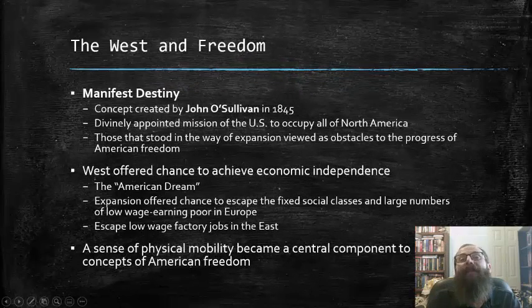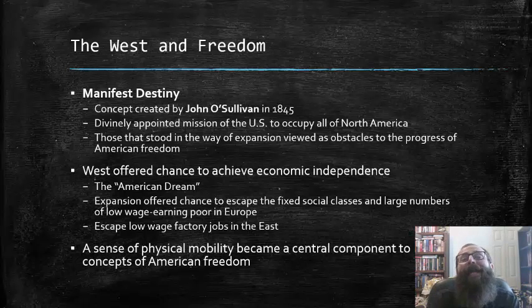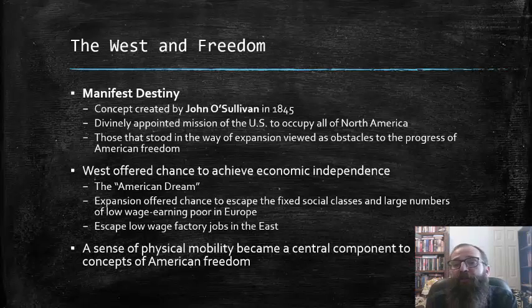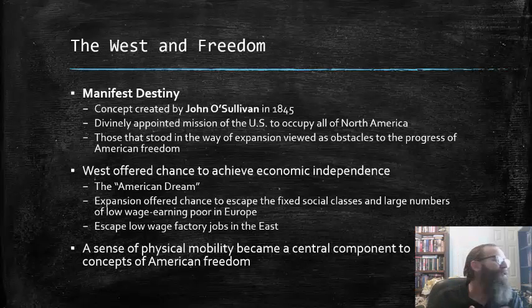The ever-increasing emphasis on Western expansion and settlement during this period led to the creation of an idea known as Manifest Destiny. This was a concept created by journalist John O'Sullivan in 1845 that basically posited that the United States had a divinely appointed mission to occupy all of North America. Those that stood in the way of American expansion were viewed as obstacles to the progress of American freedom itself.